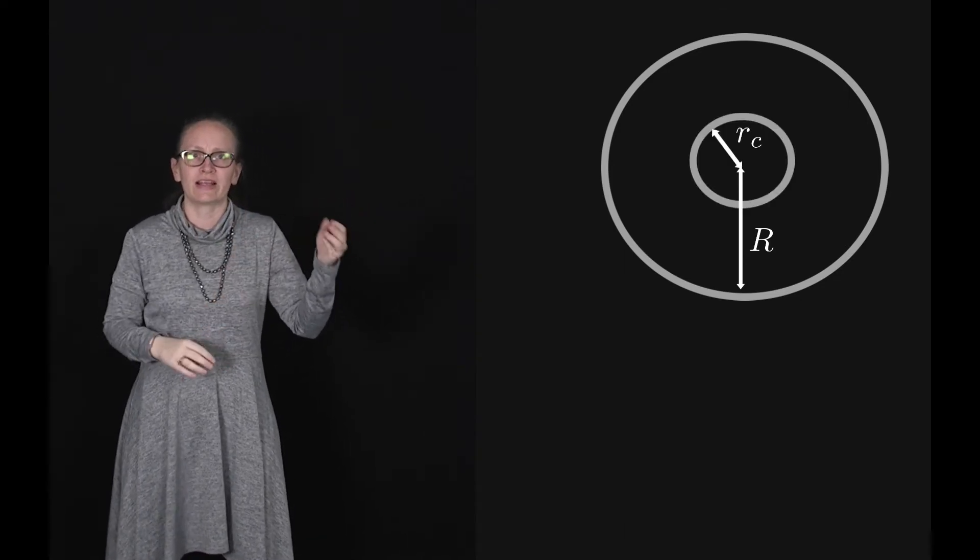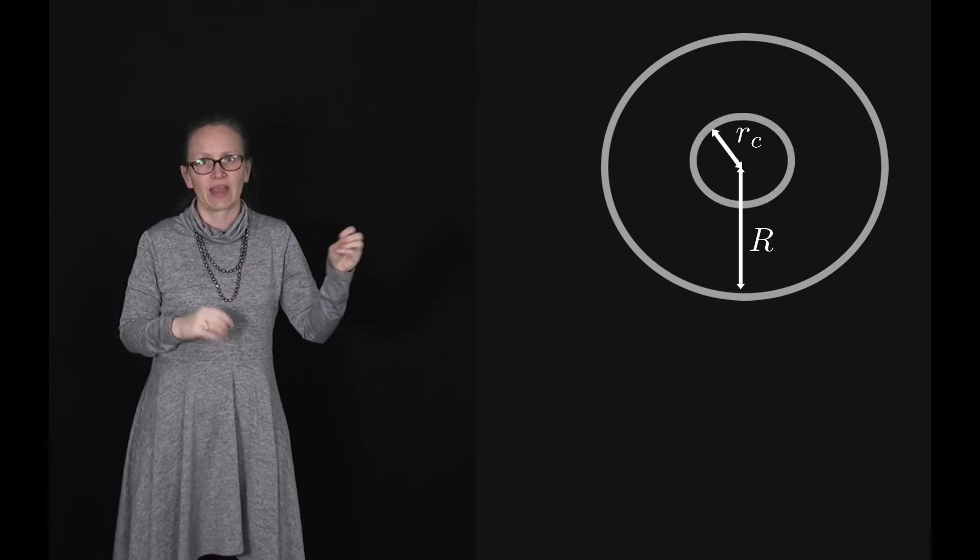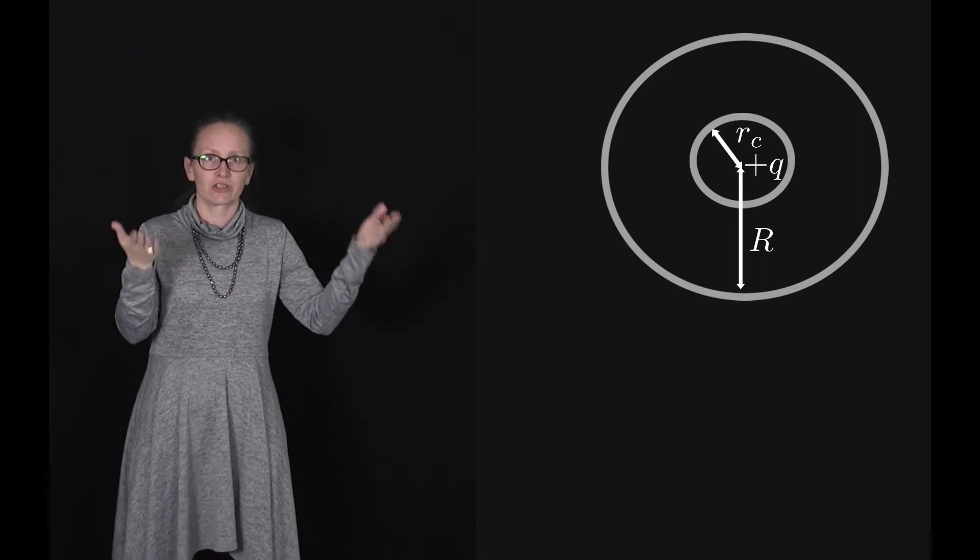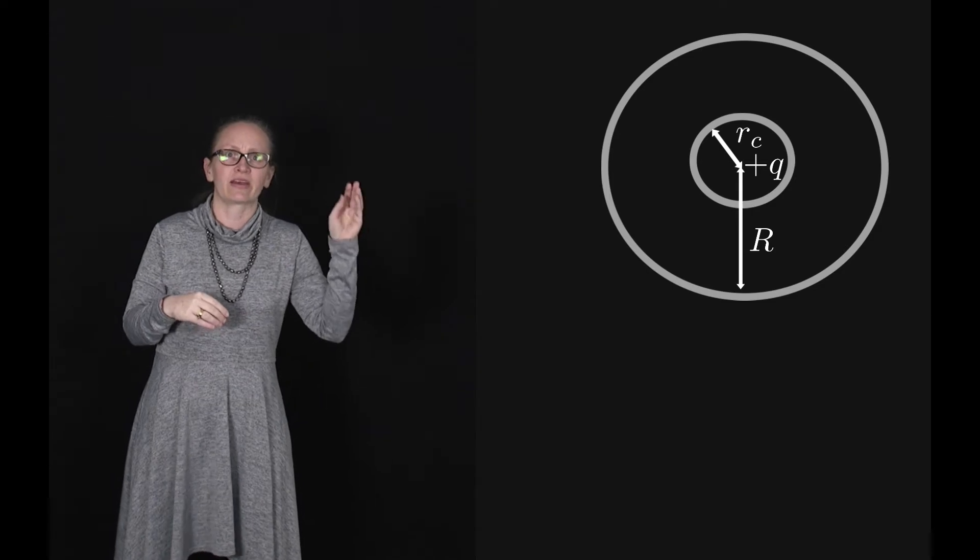Imagine that we had a neutral sphere with a radius capital R. We're going to put a cavity within our sphere, a nice spherical cavity to keep it simple with a radius R subscript c. And then inside that cavity we're going to put a positive charge plus Q. It could be anywhere within the cavity.